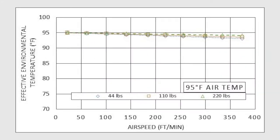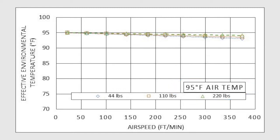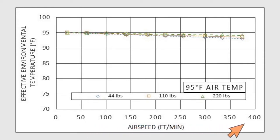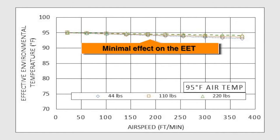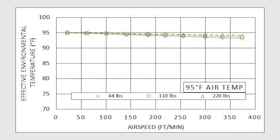In the second scenario, we have a much higher ambient temperature of 95 degrees Fahrenheit. As the graph shows, increasing the air speed from 0 to nearly 400 feet per minute has a very minimal effect on the effective environmental temperature. The effect is minimal regardless of the size and weight of the animals.